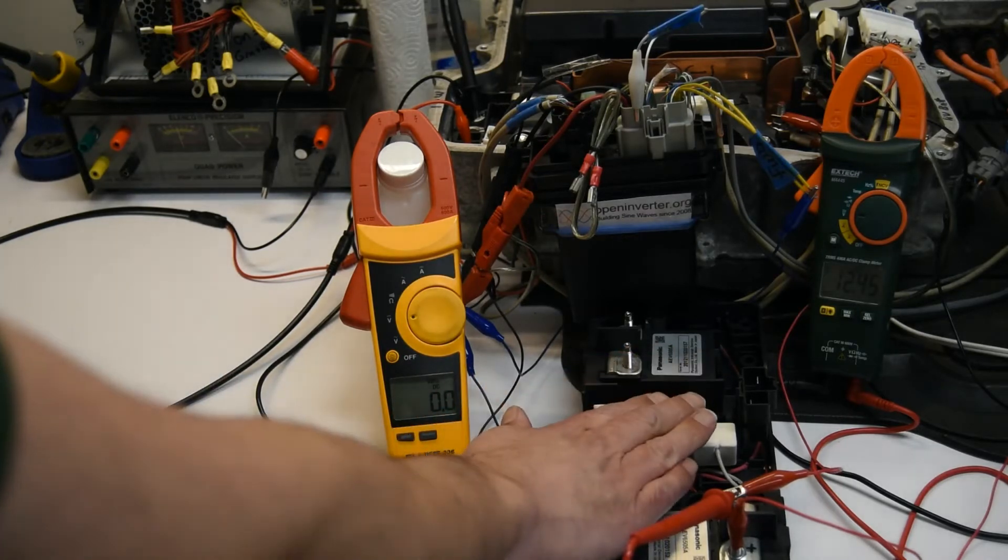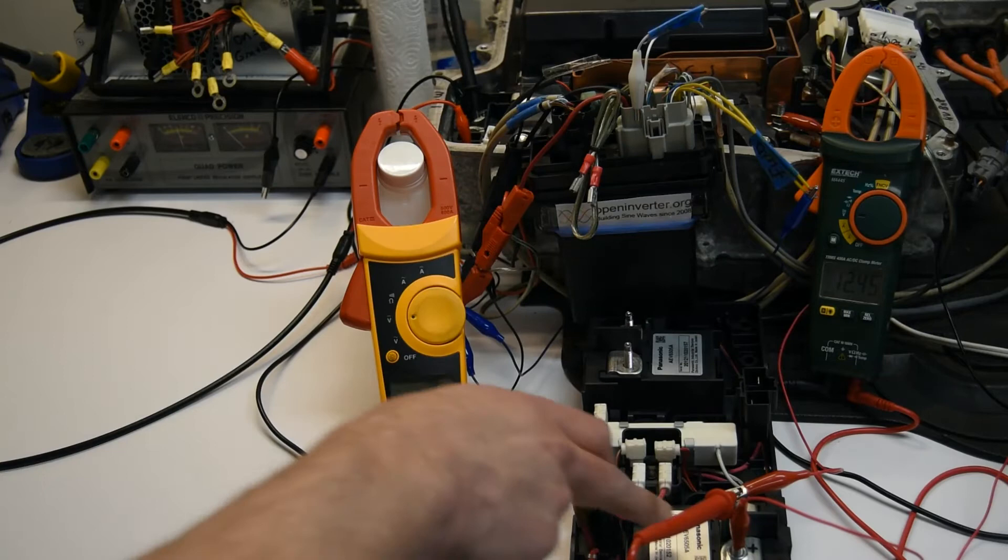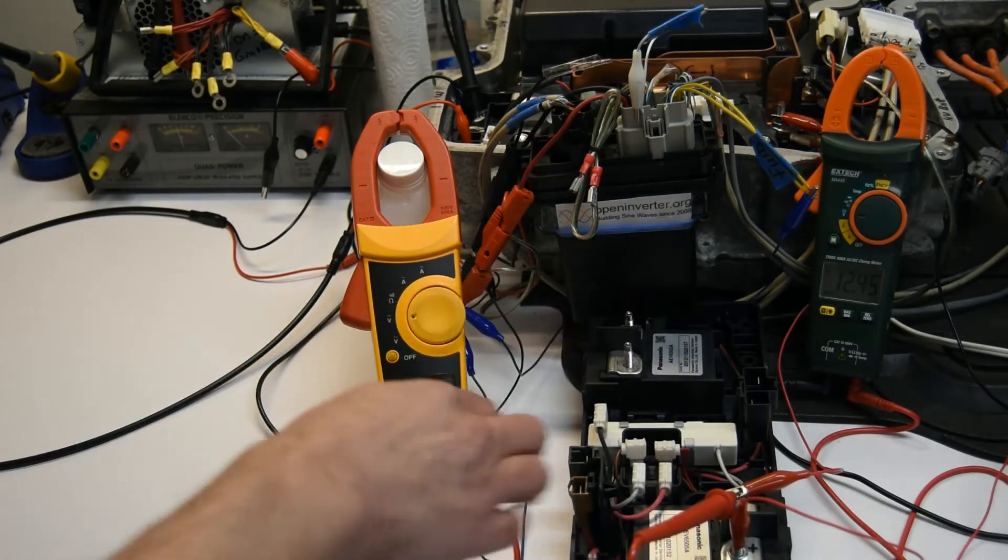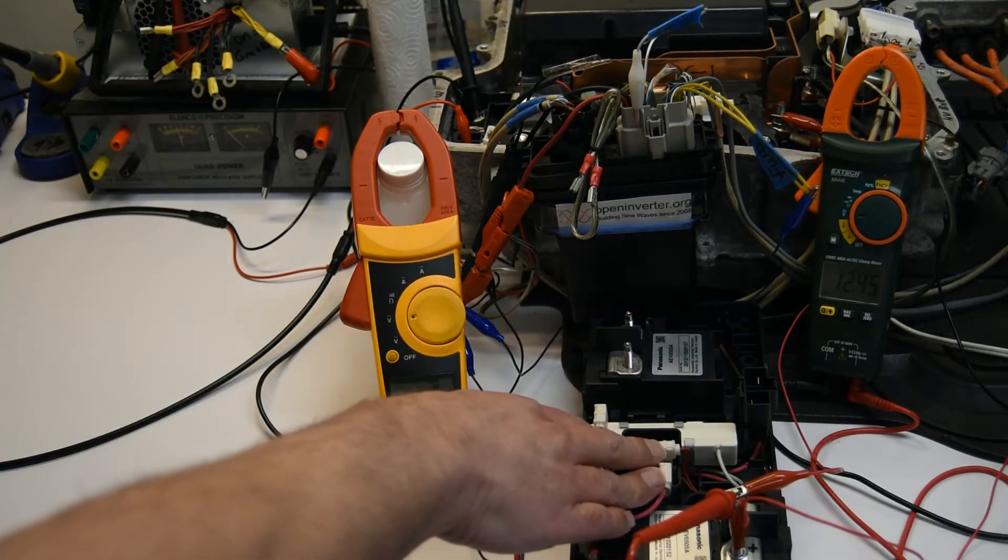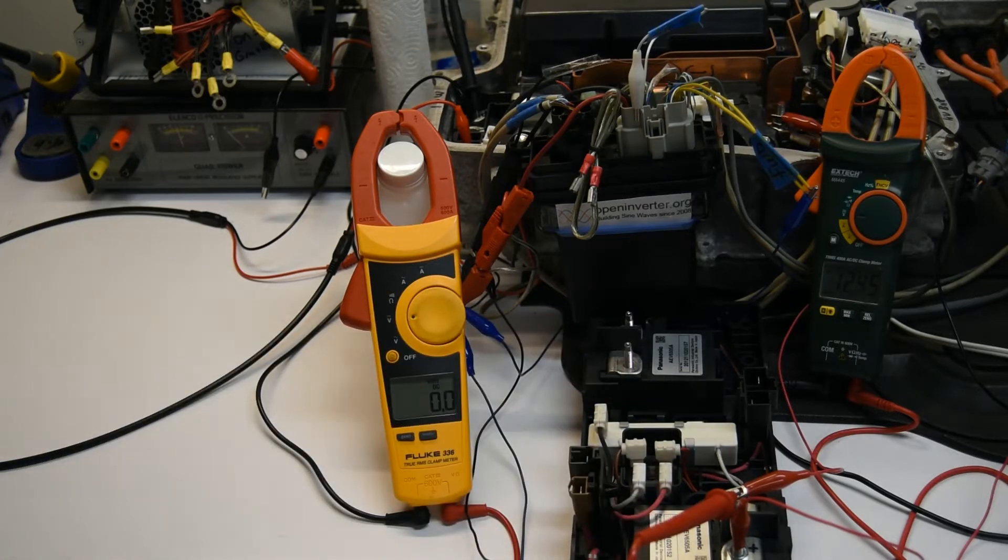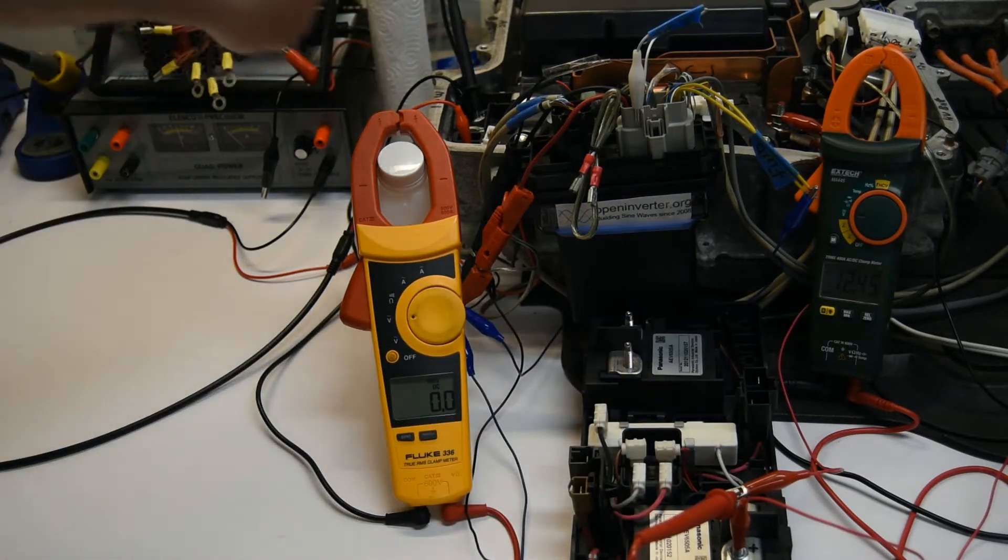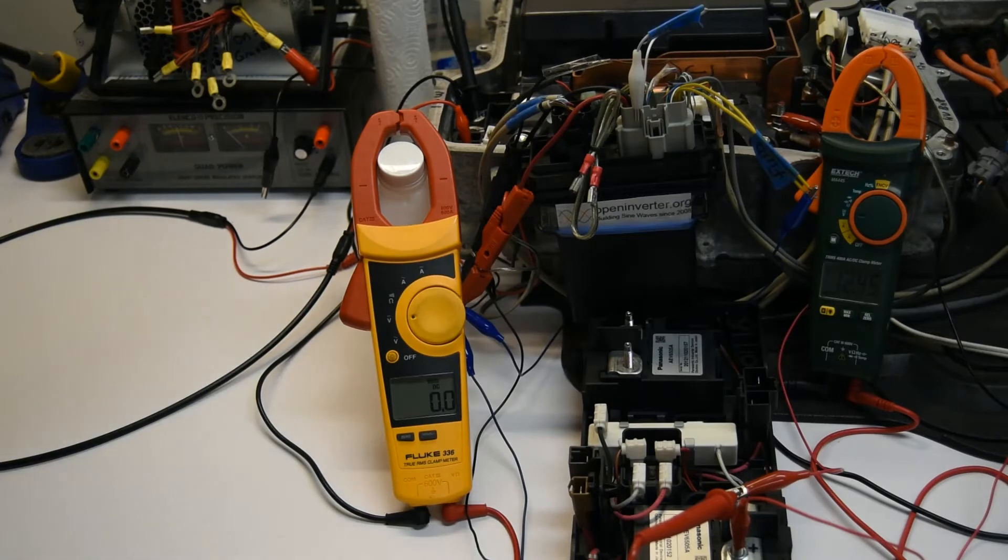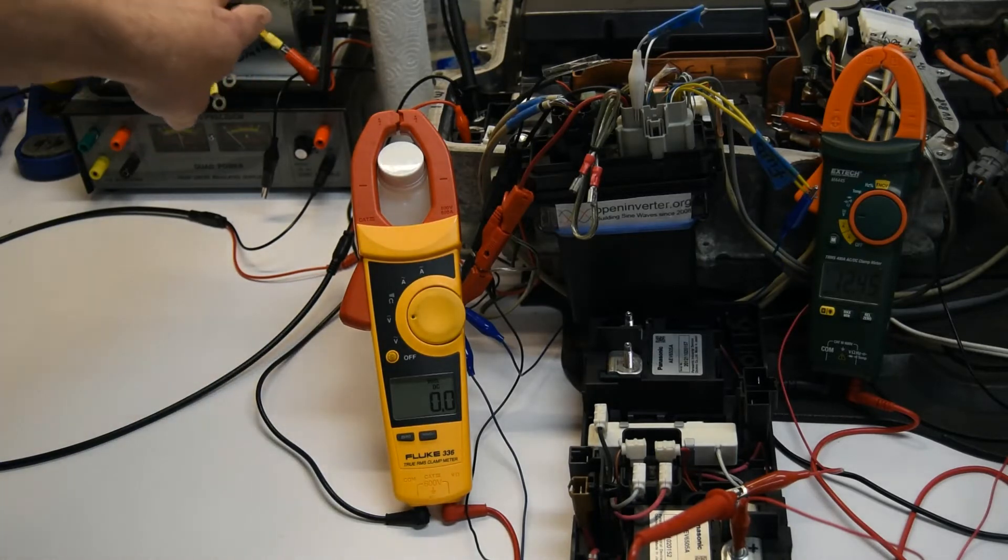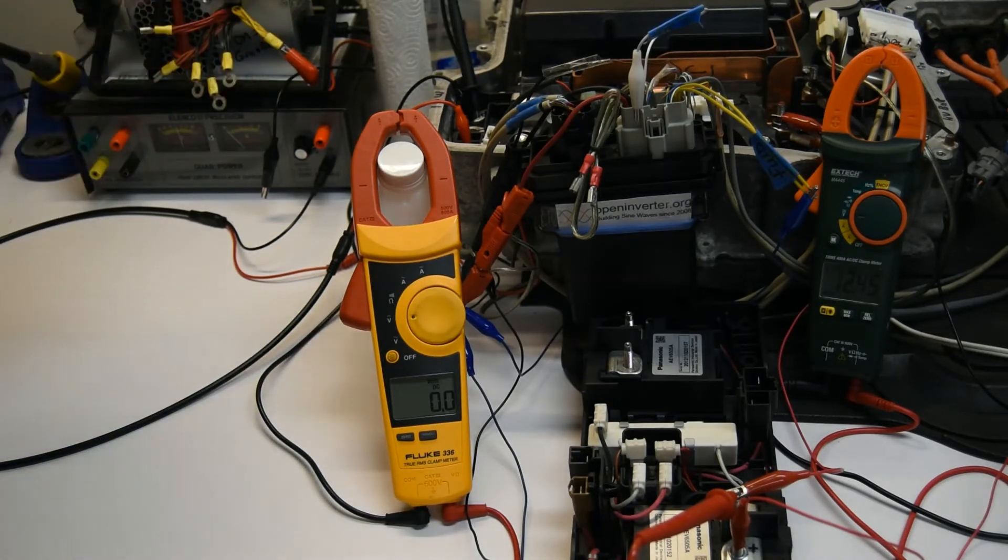I've got my Leaf relay board. I'm only using the positive side. The negative side is not connected, and the pre-charge resistor—we're not going to discuss or develop or build up anything on the input side.